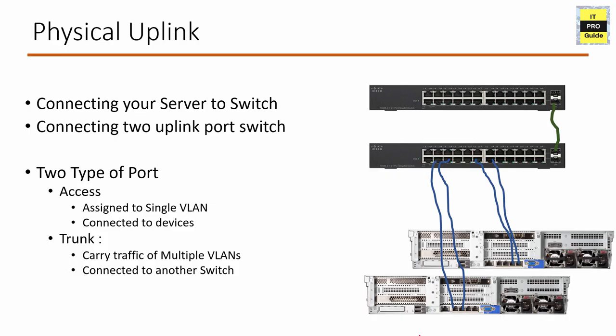Let's get started with Physical Uplinking. A Physical Uplink is a network port that allows a computer, server, or switch to communicate with other outside networks. You can configure an uplink port as either an access port or a trunk port. An access port can be assigned to only a single VLAN. You usually connect a network cable from a server or a computer to a network switch, and the switch port accepts only traffic from a single VLAN.